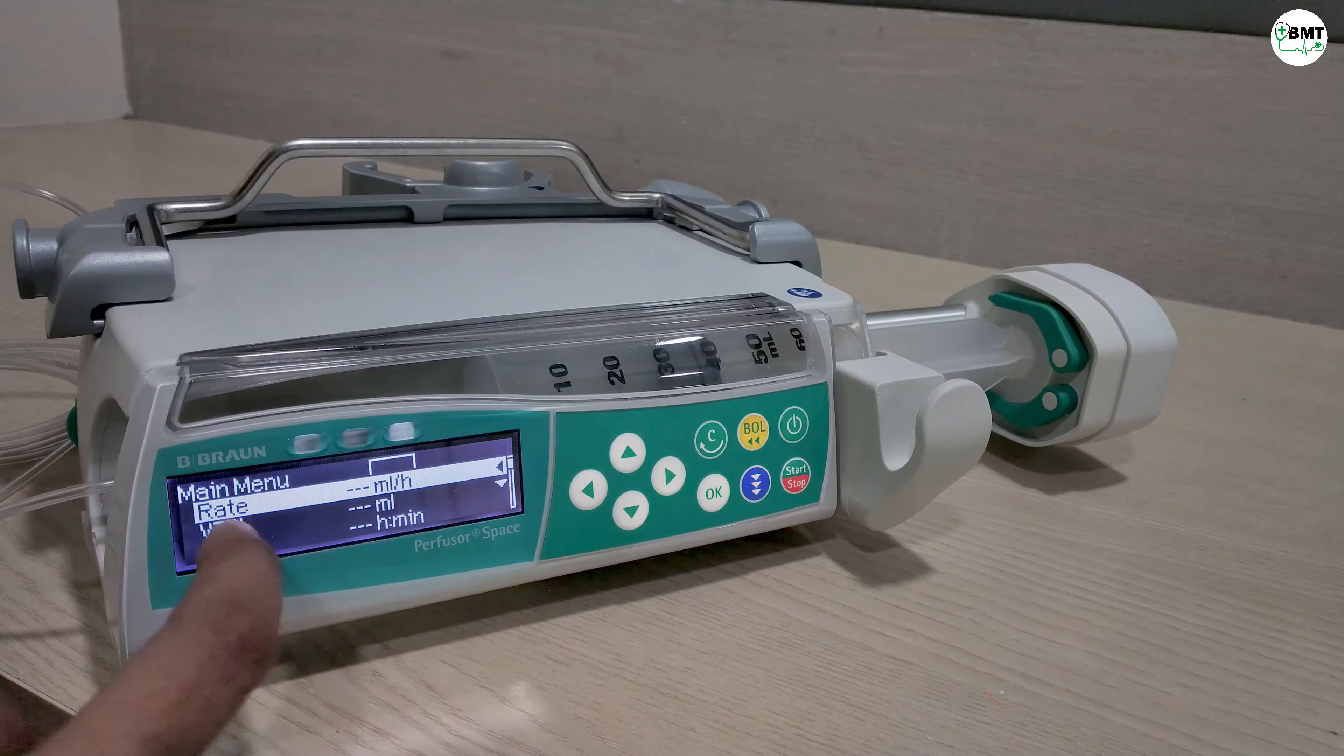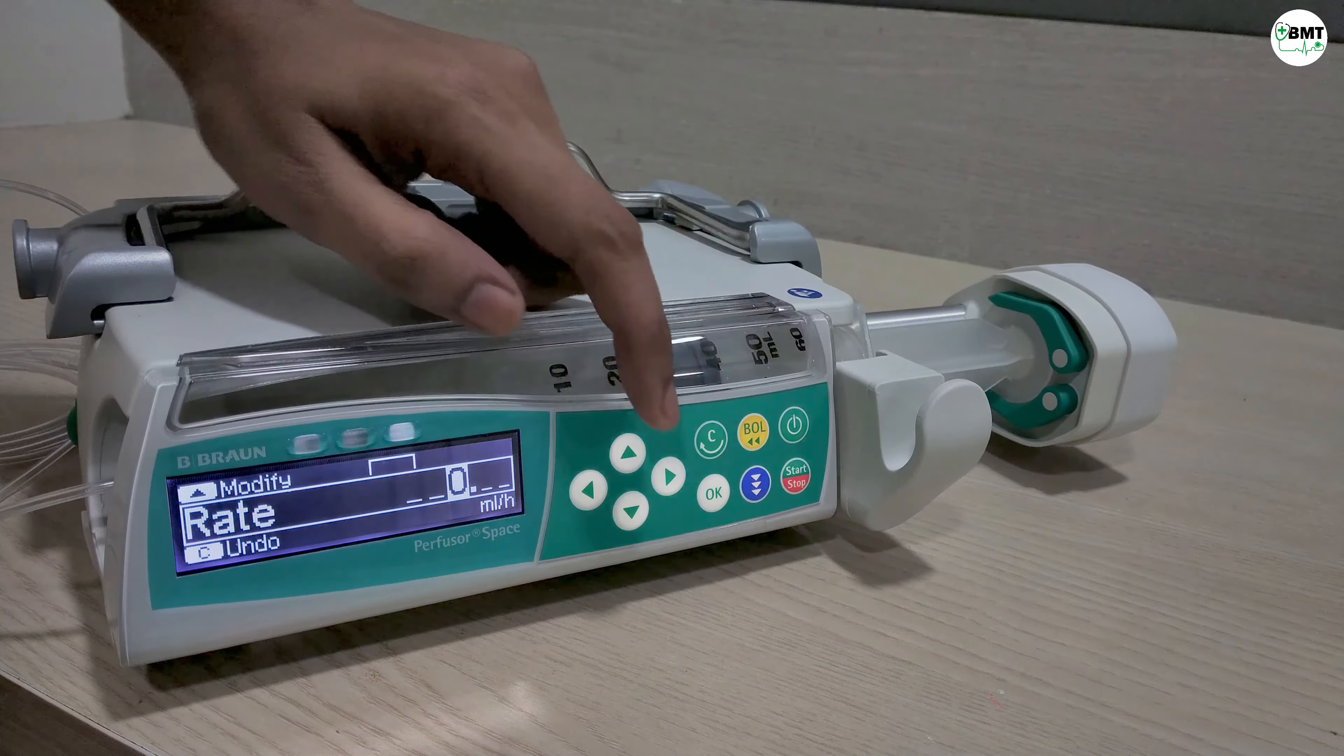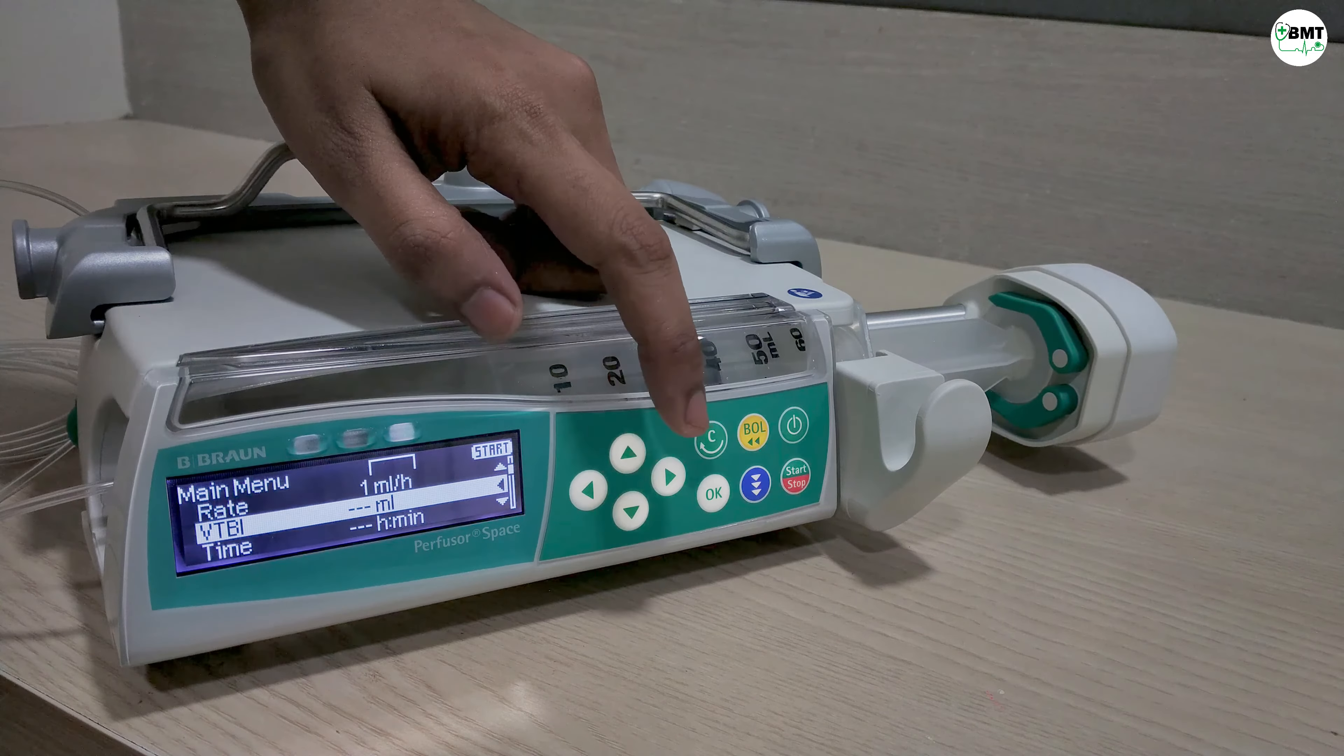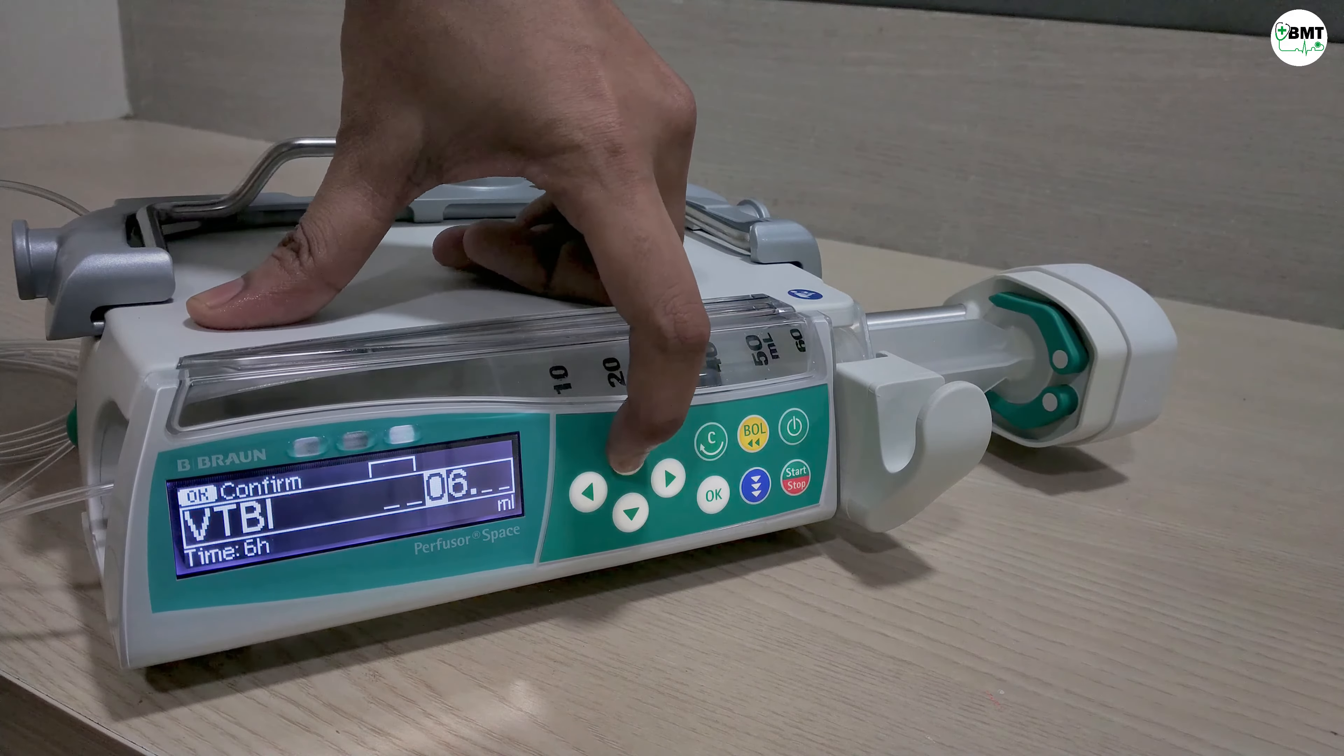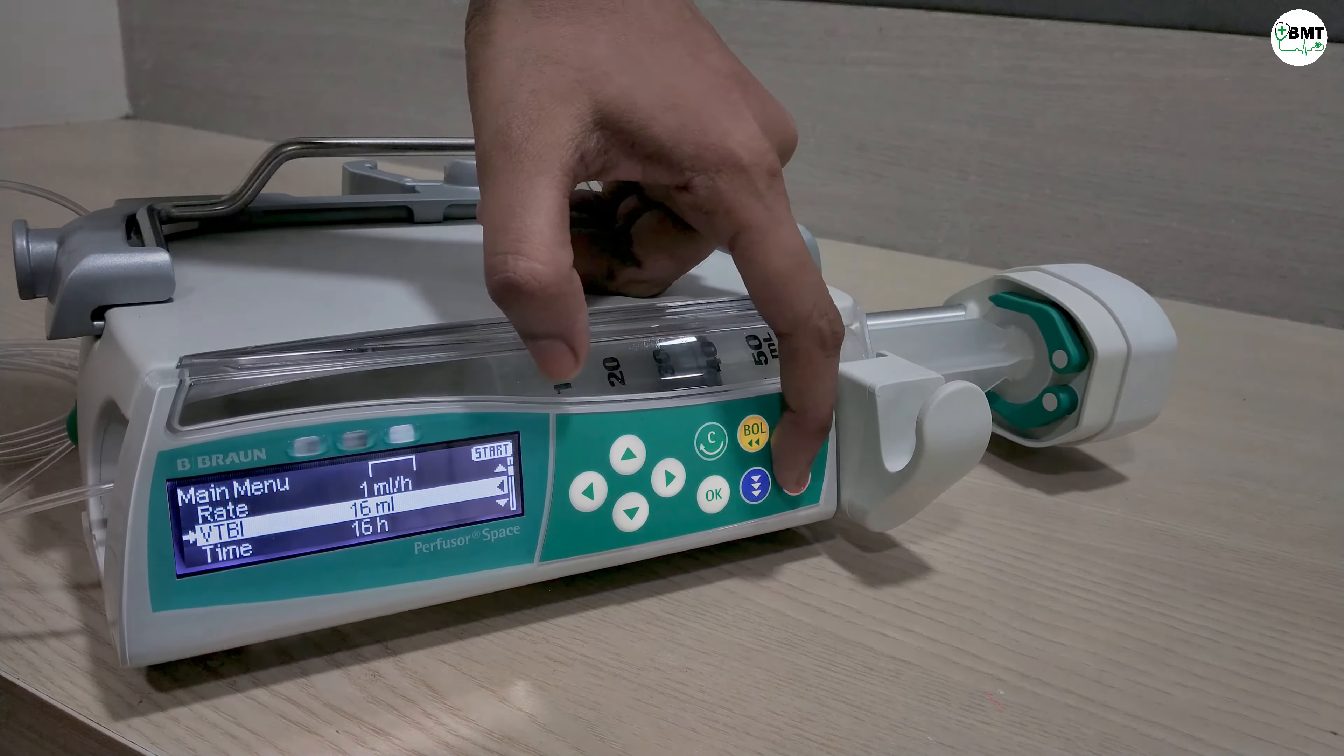Now set the rate. Increase, decrease. Once rate is set press OK. Then select the volume to be infused. OK, increase, decrease, OK. Then accordingly time will automatically get adjusted. Once set press start.